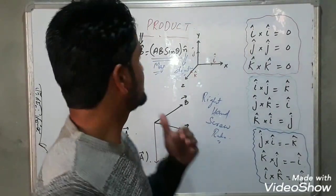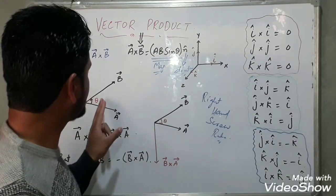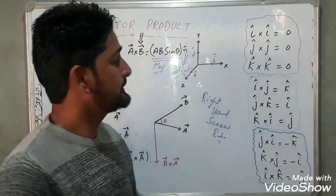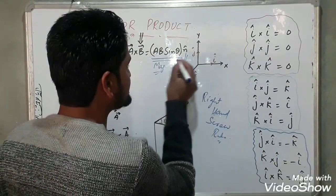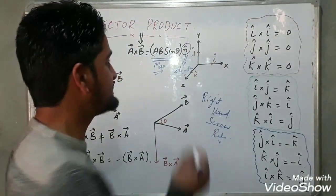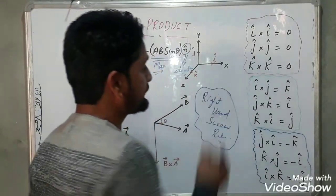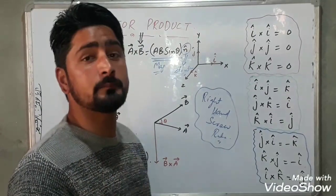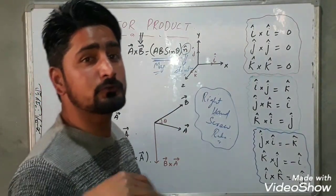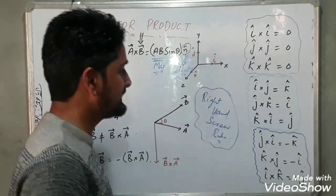In our last video, we discussed vector or cross product and we saw that if we have two vectors making some angle theta with each other, then the cross product of two vectors a cross b is equal to ab sine of theta multiplied by unit vector n. Here ab sine of theta gives the magnitude of the cross product, and this unit vector n gives the direction. The direction is given by a rule called the right-hand screw rule, and there is also one more rule called the right-hand thumb rule. For a cross b we write a cross b equal to ab sine of theta, and the direction is given by the right-hand screw rule.